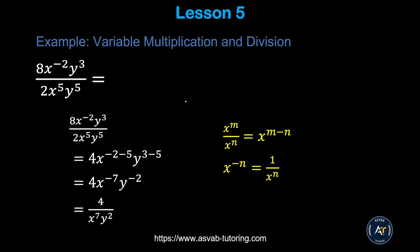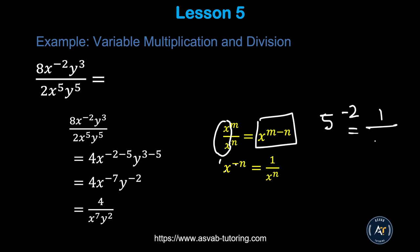Next, we'll learn how to divide algebraic expressions. When dividing variables with the same base, you subtract the exponents. An important rule: x to the power negative 1 equals 1 over x. For example, 5 to the power negative 2 equals 1 over 5 squared. In our problem: 8 divided by 2 is 4, then x exponent is negative 2 minus 5, and y exponent is 3 minus 5.